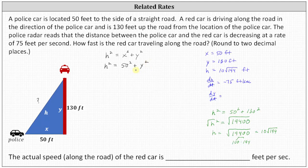And now we'll differentiate both sides of the equation with respect to T. On the left, the derivative of H squared with respect to T is 2H times dH/dt. On the right, the derivative of 50 squared with respect to T is zero, because 50 squared is a constant, plus the derivative of Y squared with respect to T, which is 2Y times dy/dt.